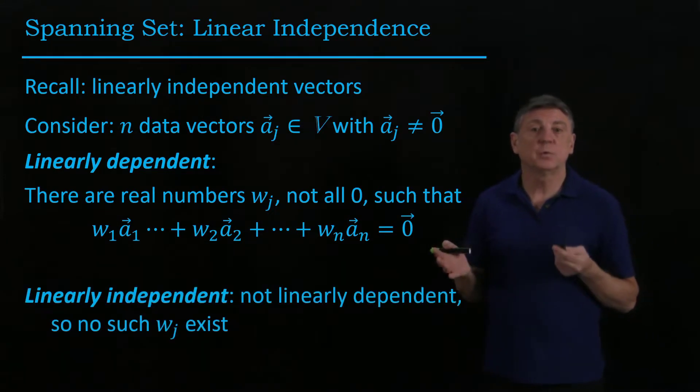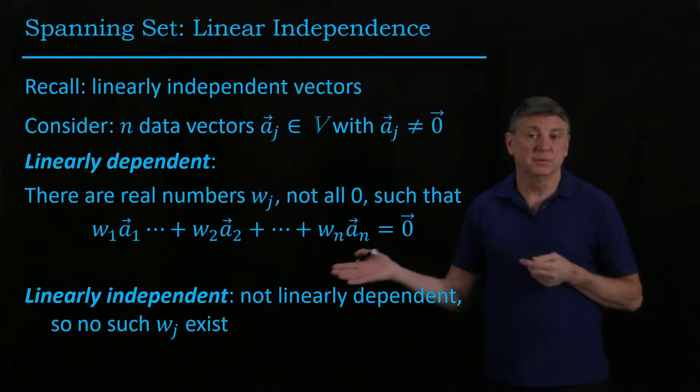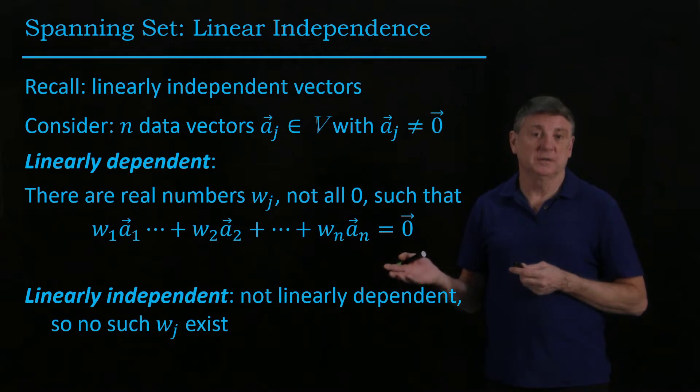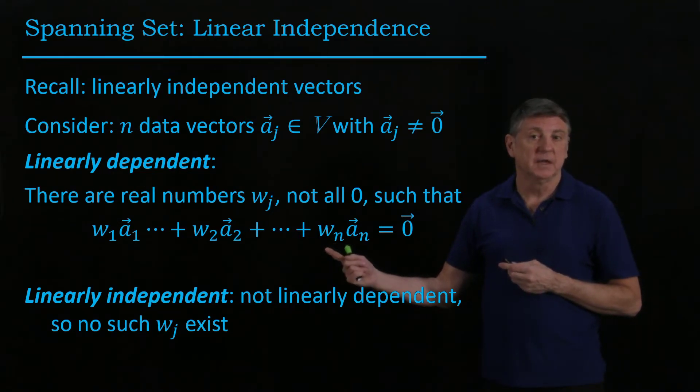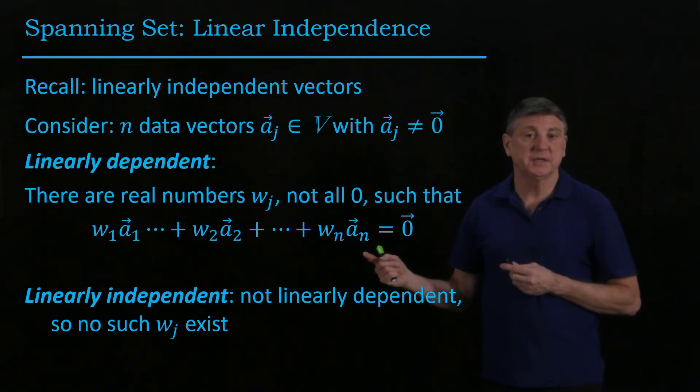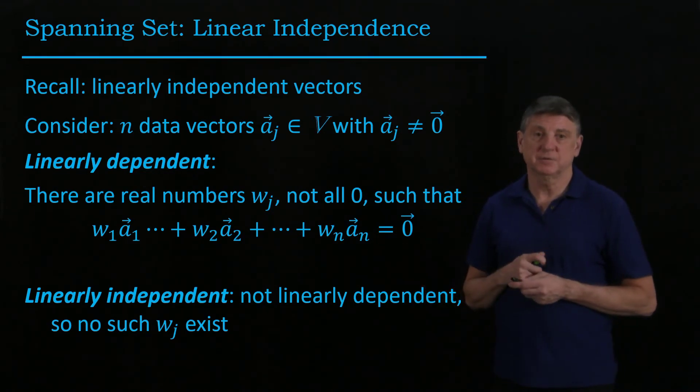Linearly independent simply means not dependent. There are no such non-zero scalar values w_1 through w_n that create a linear combination expressing the zero vector.